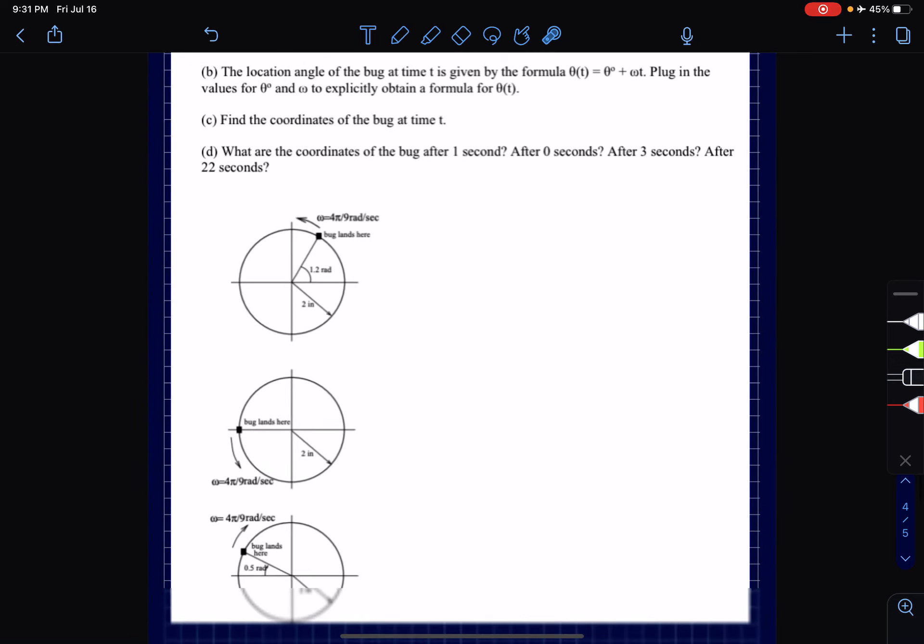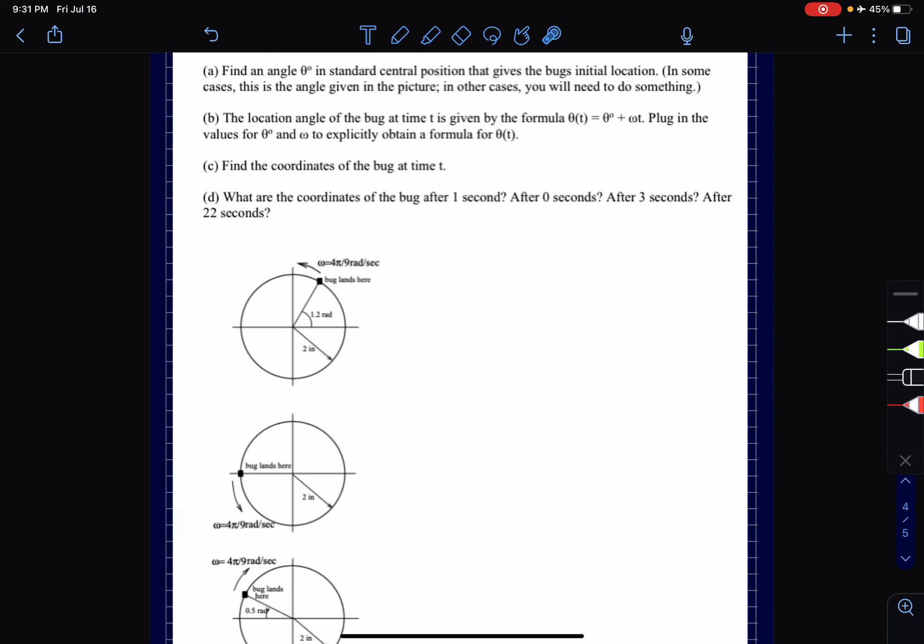So it gives us these three diagrams and then asks us to find the angle of the starting position essentially, and then give the location of the bug at time t using a formula. Then it wants us to find the coordinates of the bug at time t and it wants us to use 0, 1, 3, and 22 seconds for t and then find the coordinates at those times.